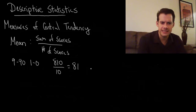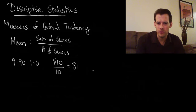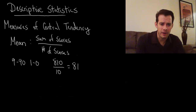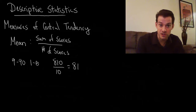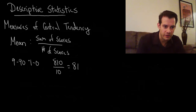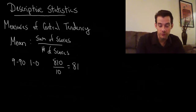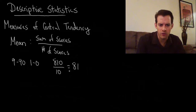Now you can see the problem with using the mean. It's very sensitive to this zero — this zero has a very strong effect. Without it, the average would have been 90, and then one zero brings it all the way down to 81.